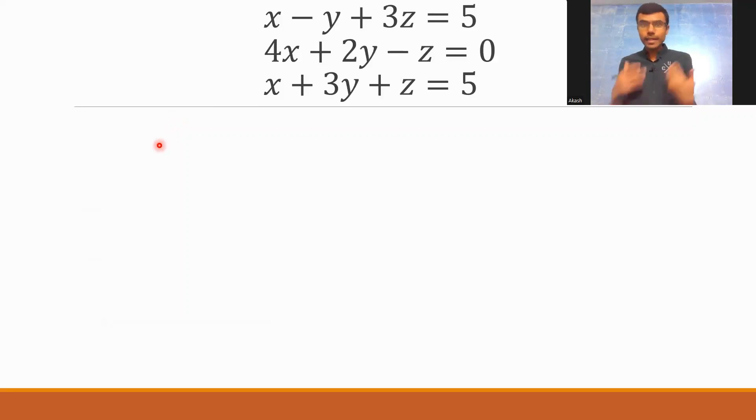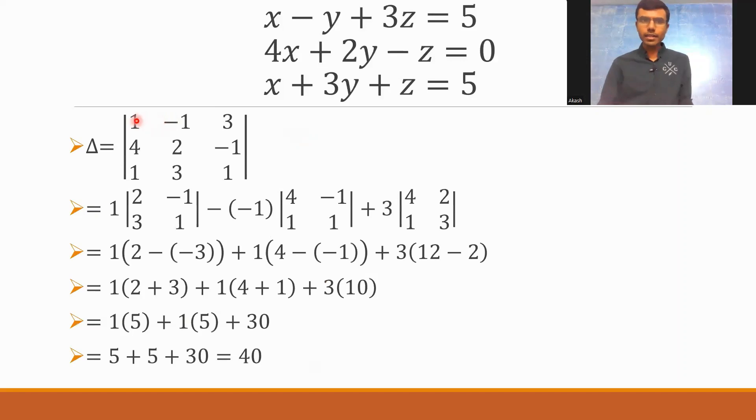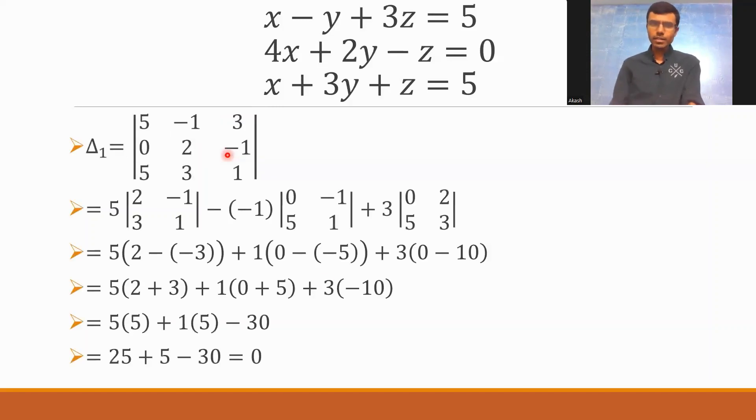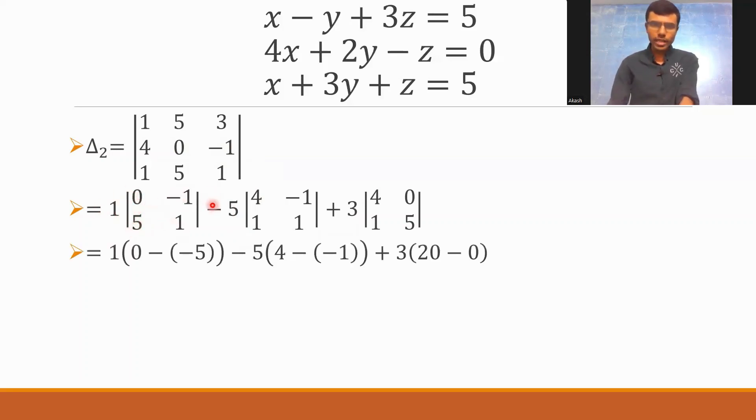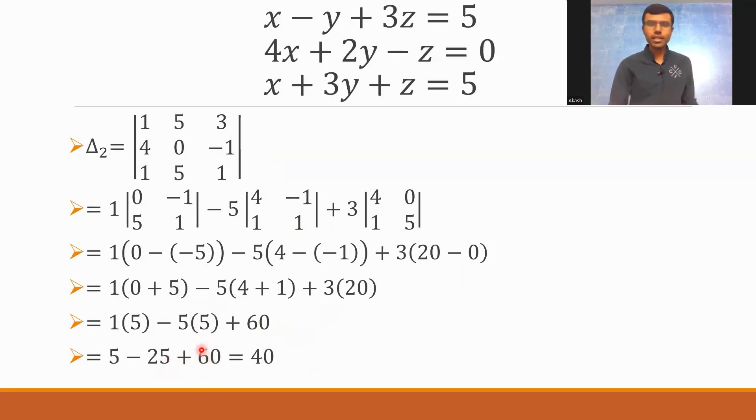Now, next. Next, I need to find out delta 2. Now, for the delta 2, if you go, this is our delta. Previously, I replaced the first column of delta with the elements of D. Now, I need to replace the second column of delta with the elements of capital D. What are they? 5, 0, 5. So, in this place, I would get 5, 0, 5. That's my delta 2. That's it. Again, basic expansion after this. Fine. So, 1 into determinant of this, minus 5 into determinant of that, plus 3 into determinant of 4, 0, 1, 5. Basic expansion. I'll go a bit fast. 1 into 0, 1 is 0, minus of minus 5. Minus 5 into 4, 1 is 4, minus of minus 1. Plus 3 into 4, 5 is 20, minus 0. Fine. If I'll solve it, minus of minus is plus. So, I'll get 0 plus 5 and 4 plus 1 and 3 into 20. 1 into 5 minus 5 into 5, 4 plus 1 is 5. 5 minus 25 plus 60, which is nothing but minus 20 plus 60, which is nothing but 40. Fine.